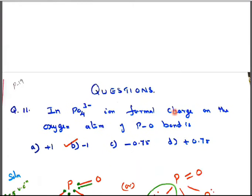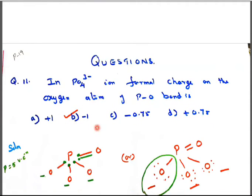Welcome back to the next session set of questions. In phosphate ion PO4³⁻, formal charge on the oxygen atom of P-O bond: whether +1 or -1 or -0.75 or +0.75?